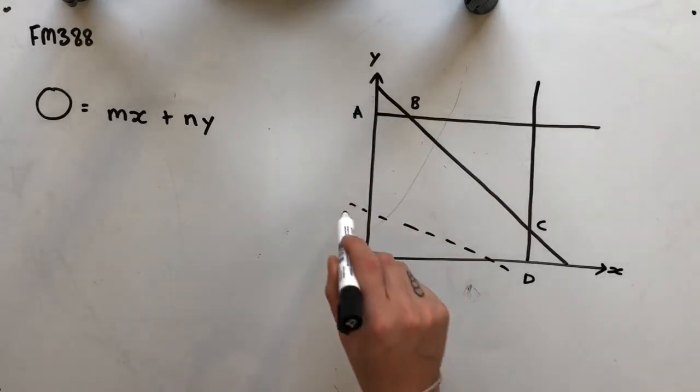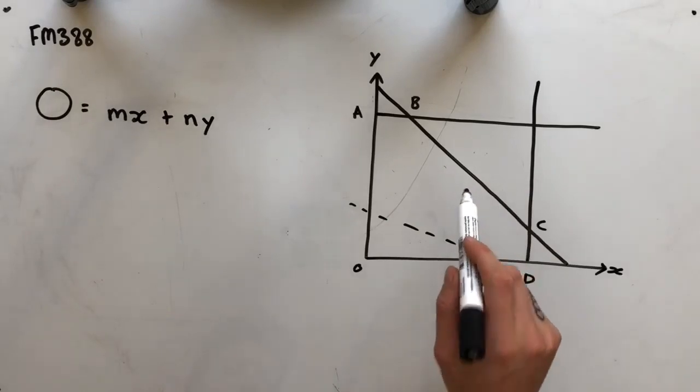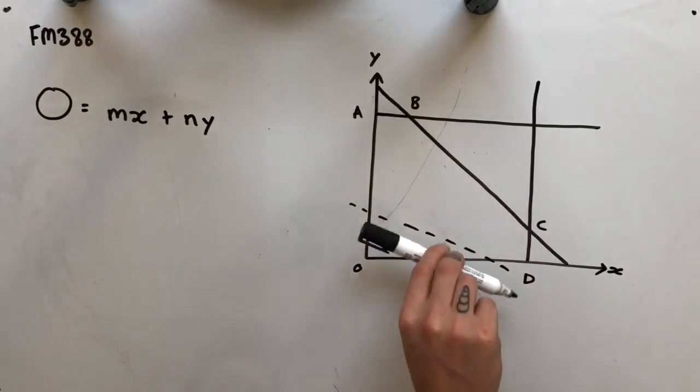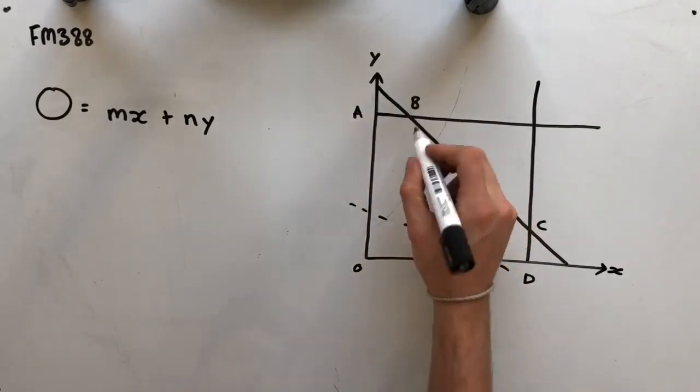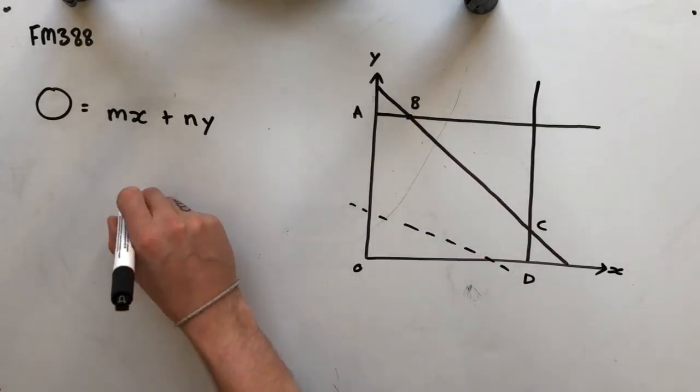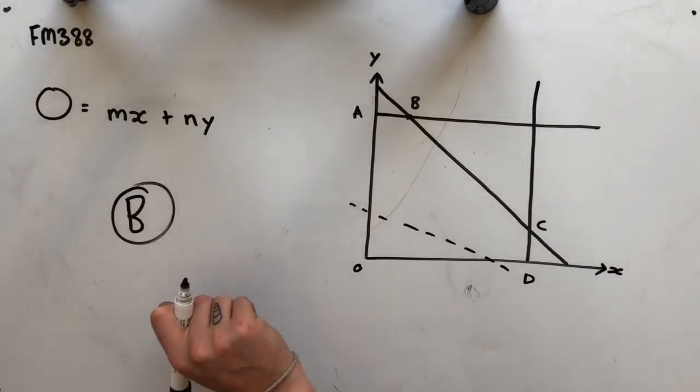So considering that the gradient of the objective function is slightly less, sorry, I should say, well less in the negative direction, then this line here, as we slide this up, the last point we will move through is this point here, point B, meaning that B will in fact be the maximum value of the objective function.